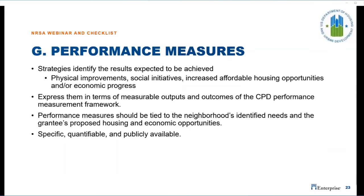Performance measures should be reported on regularly so that stakeholders and affected citizens stay informed and you can assess how and where the strategies are making progress. The grantee's strategy must identify the results expected to be achieved, such as physical improvements, social initiatives, increased affordable housing, and/or economic progress, expressing achievements in terms of measurable outputs and outcomes of the CPD Performance Measurement Framework. Performance measures should be tied to the neighborhood's identified needs and the grantee's proposed housing and economic opportunities.